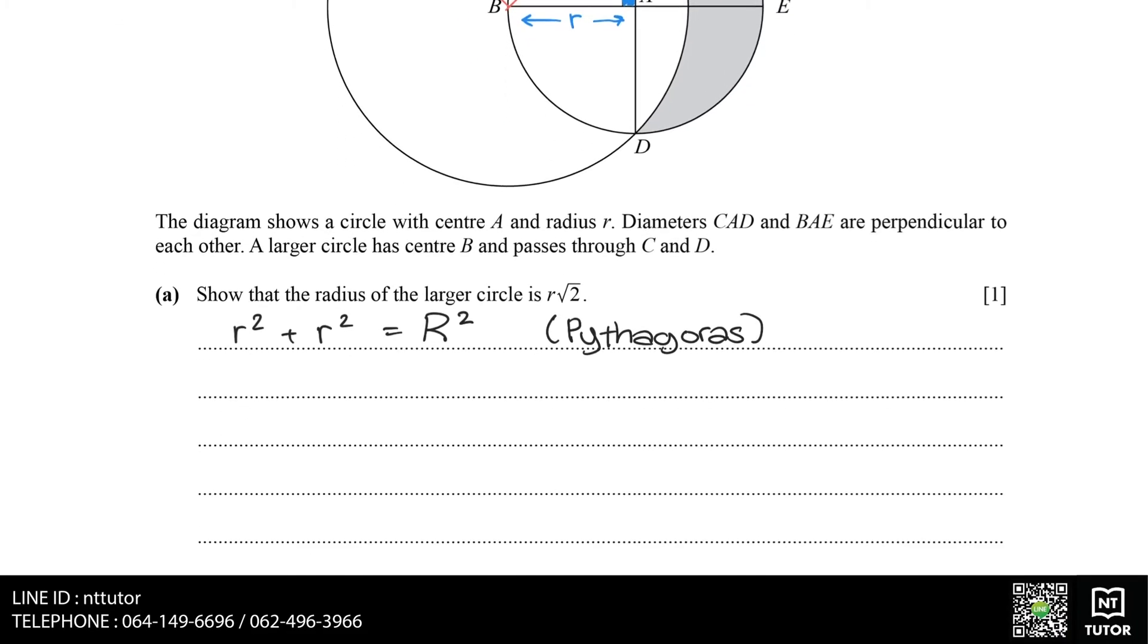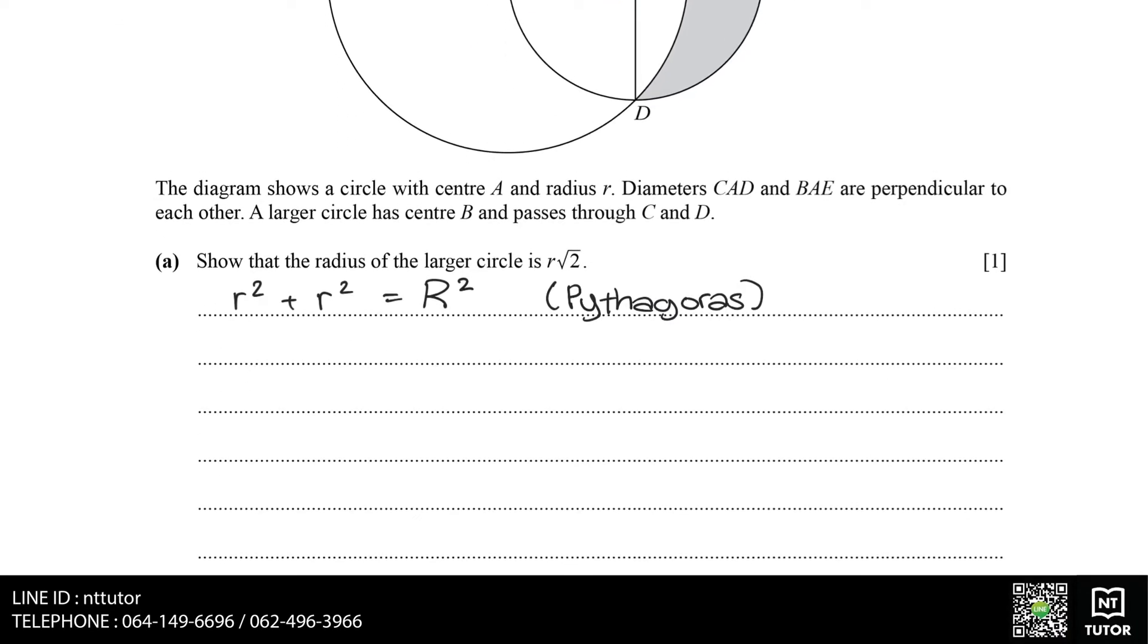Therefore R squared plus R squared equals big R squared, and we can use this to solve for big R, which is the radius of our larger circle.